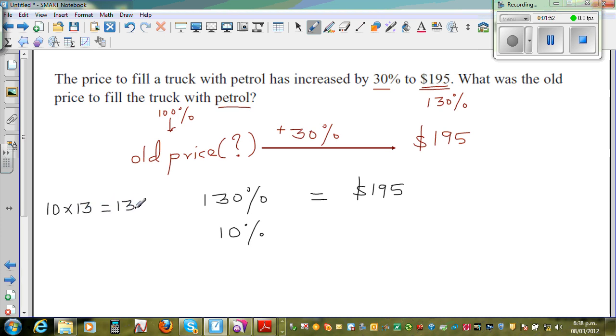So there are 13 lots of 10 in 130. So 10% would be 195 divided by 13. 195 divided by 13.